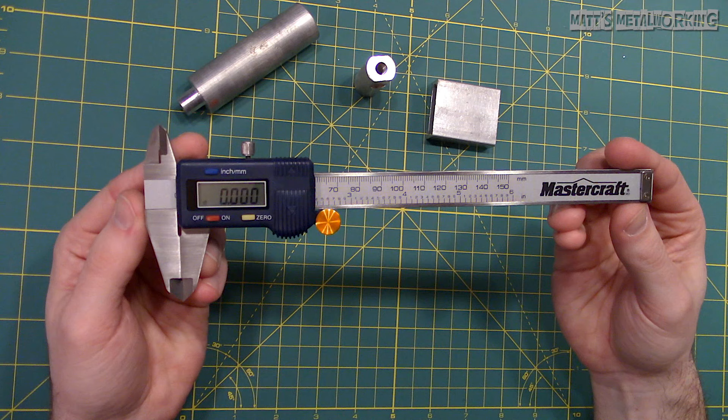Here is the fine adjustment thumb wheel to achieve accuracy when setting up or adjusting the feel or drag when measuring an object. Then the thumb grip for quick or large adjustments. A thumb screw lock to hold the caliper measurement in place.